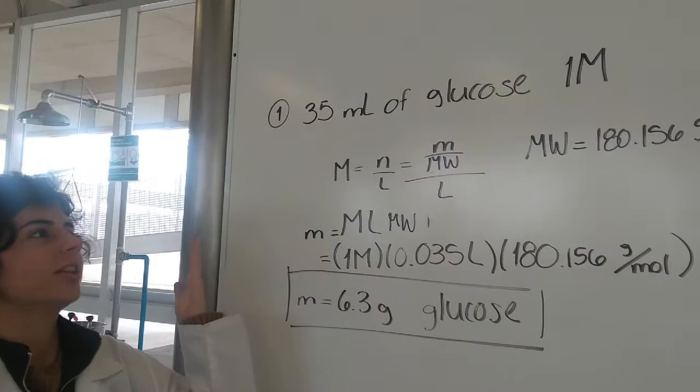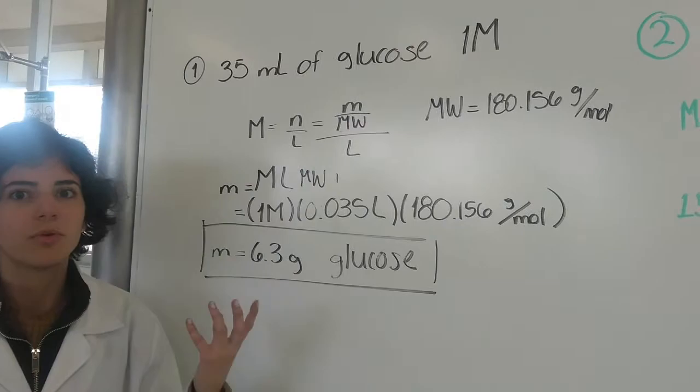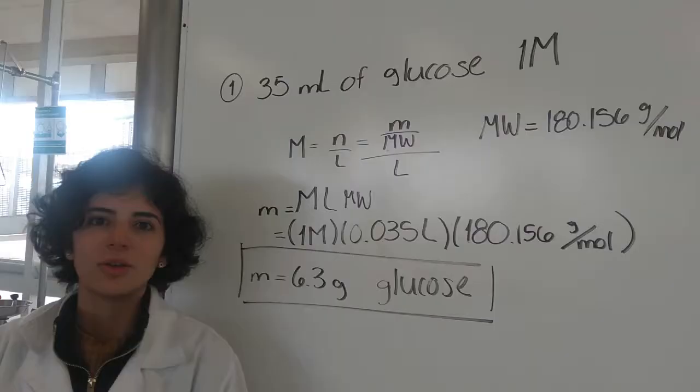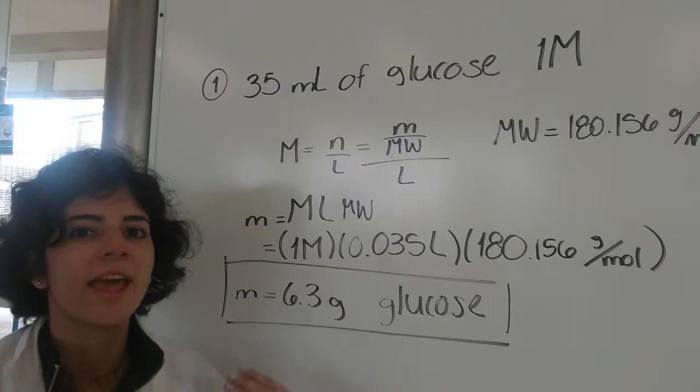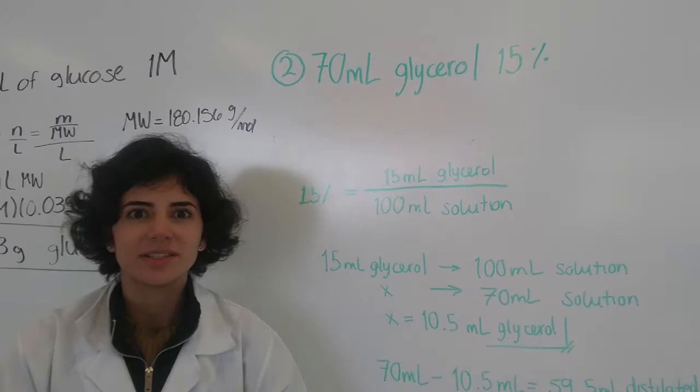For the first solution, we prepare 35 milliliters of LB broth in warm water. We use the molar formula to get the required amounts, following the standard protocol for solution preparation. This specific solution will also be sterilized.